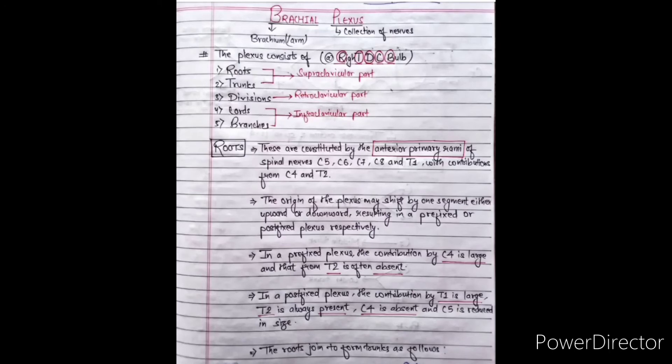The origin of the plexus may shift by one segment either upward or downward, resulting in a prefixed or postfixed plexus. In a prefixed plexus, the contribution by C4 is large and that from T2 is often absent. In a postfixed plexus, the contribution by T1 is large, T2 is always present, C4 is absent, and C5 is reduced in size.